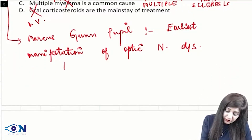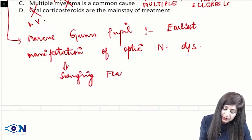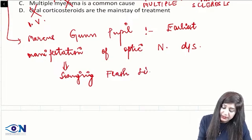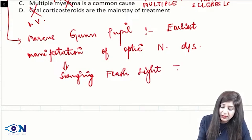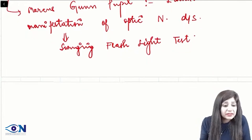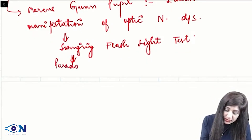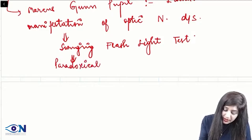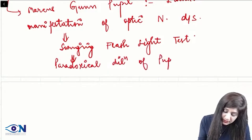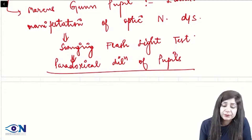So, Marcus Gunn pupil — RAPD — is the earliest manifestation. We test for it using the swinging flashlight test. When performing the swinging flashlight test, we get paradoxical dilatation of the pupils.